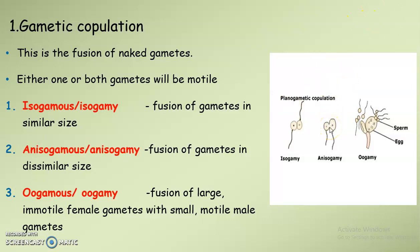In anisogamy, the two gametes are dissimilar — the first gamete is small and the second gamete is large — and these two dissimilar gametes fuse to form a zygote. In the third case, oogamy, we see the fusion of a large egg and a motile sperm or male gamete that is small.